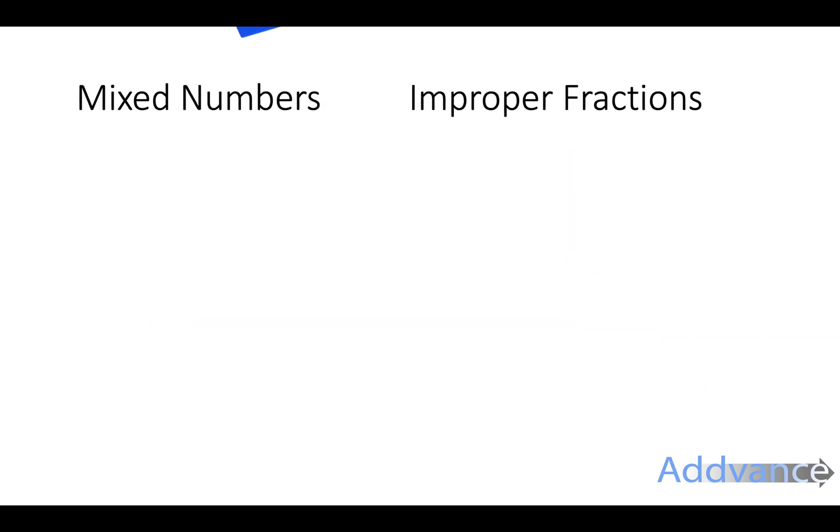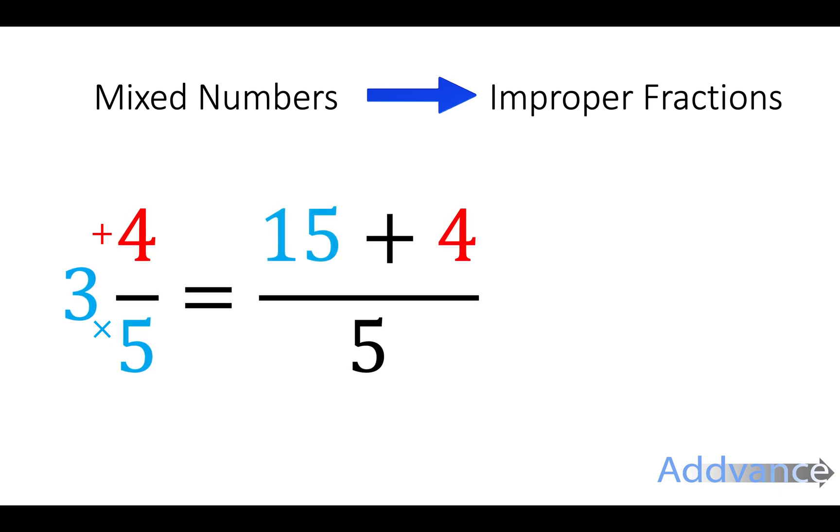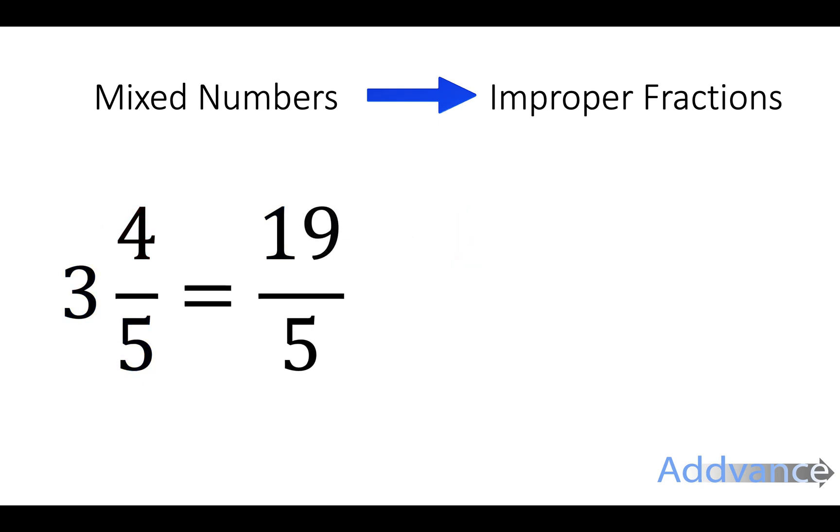Now let's imagine we wanted to go from a mixed number to an improper fraction. The rule is we multiply the 3 by the 5 here. That's big number by the denominator, and then we add the 4. 3 times 5 is 15 plus the 4 is 19. The bottom number stays the same, the denominator stays the same. So it will be 19 fifths.